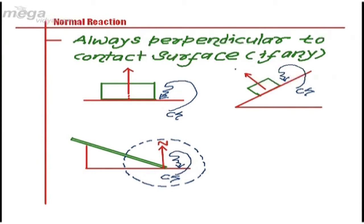In the previous cases, normal reaction is perpendicular to the inclined surface, and here again perpendicular to the horizontal surface.